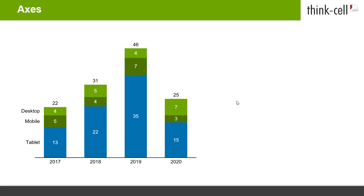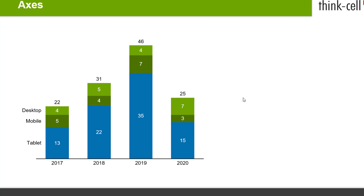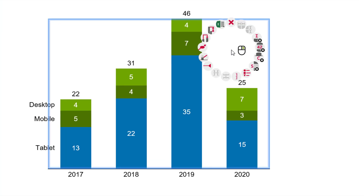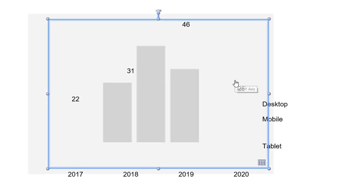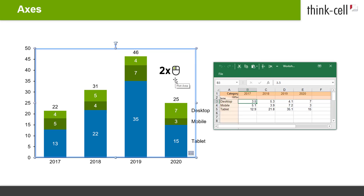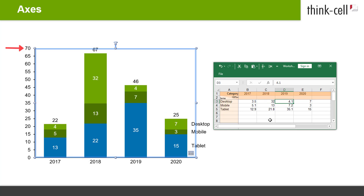Let's say you would like to insert a y-axis to your stacked chart. Right-click onto the chart and select Add Y-Axis from the context menu. The axis is added to the left of your chart. ThinkCell automatically scales the value axis according to the size and values of your chart and keeps it up to date when your data changes.